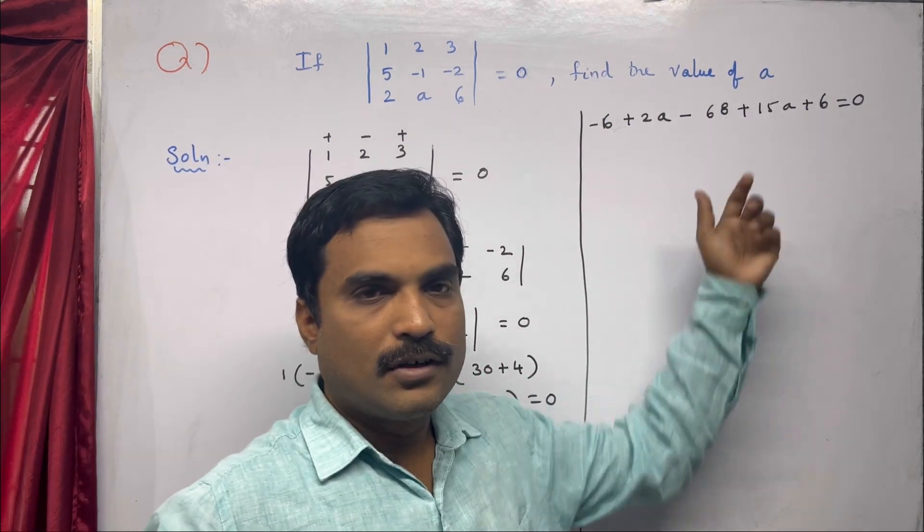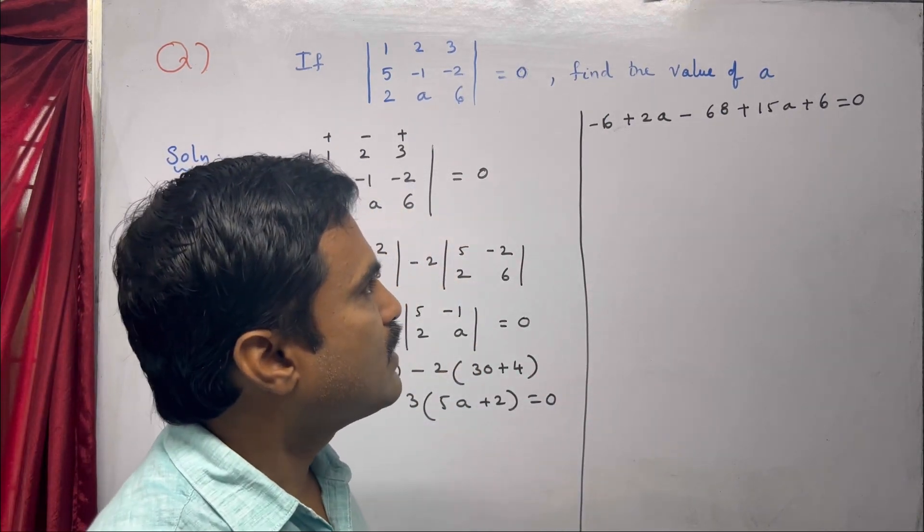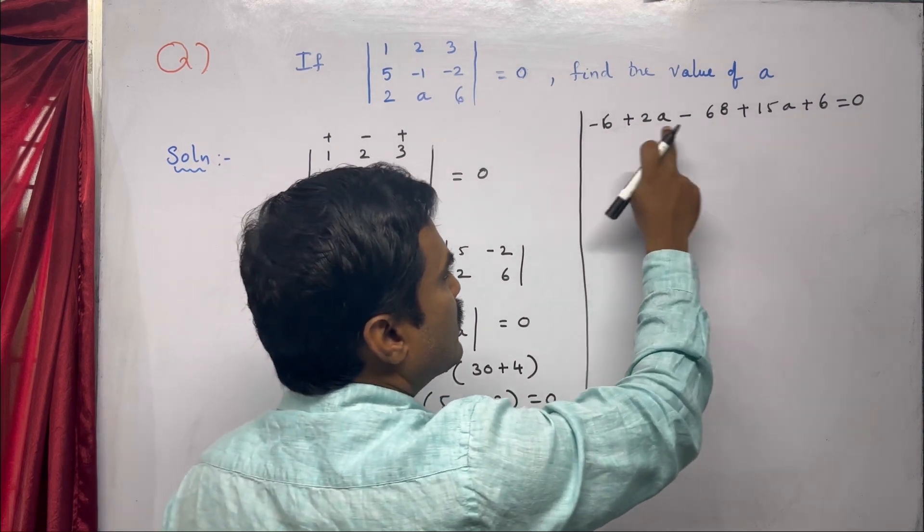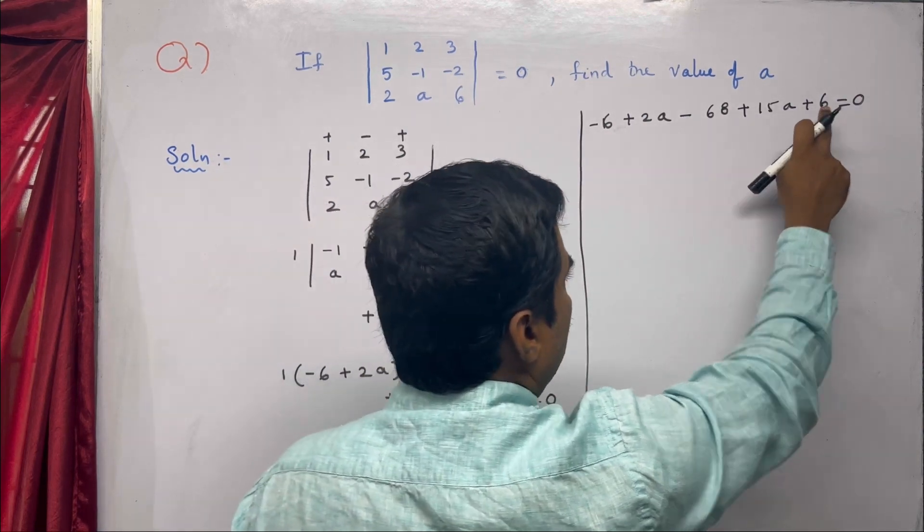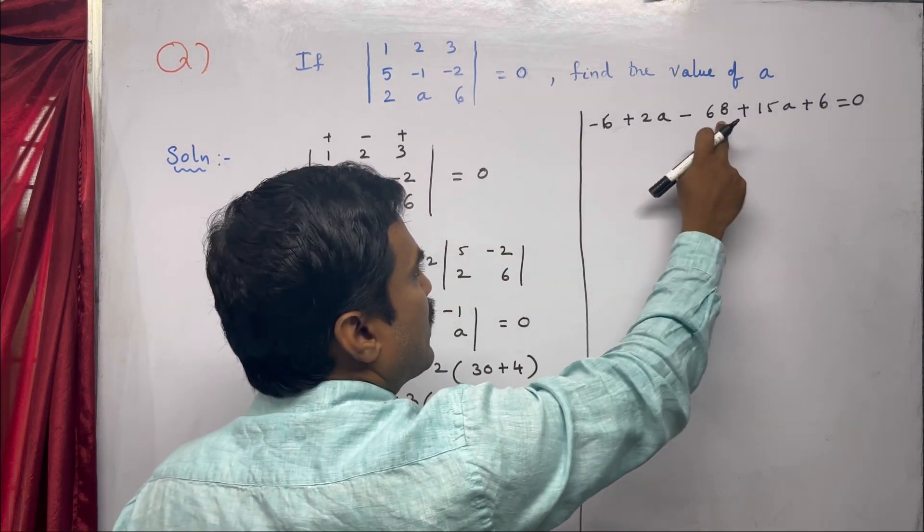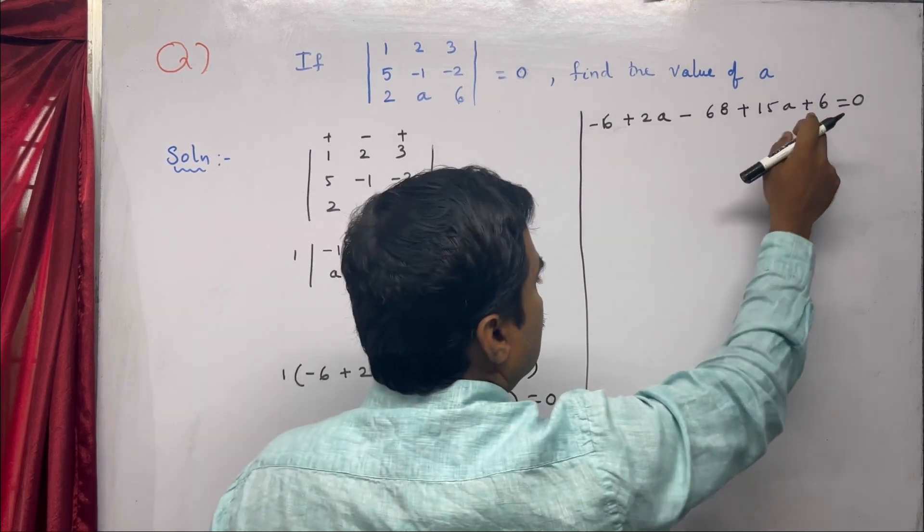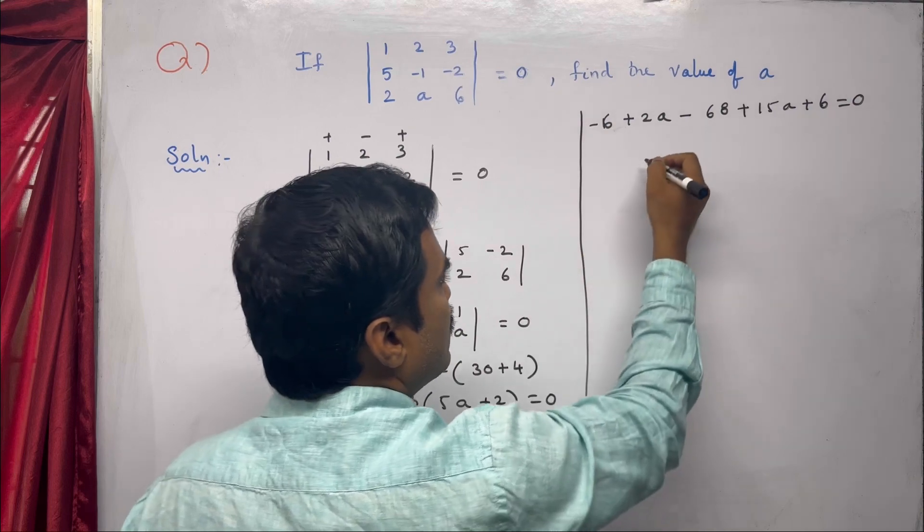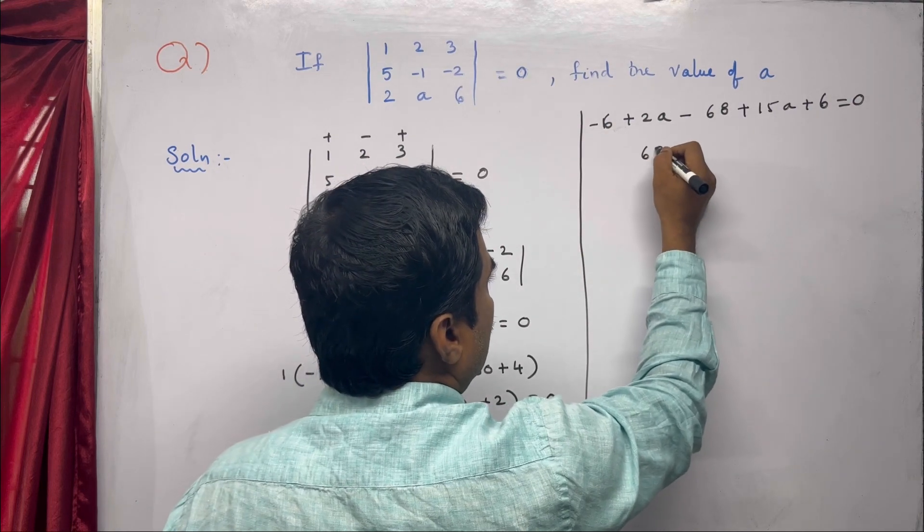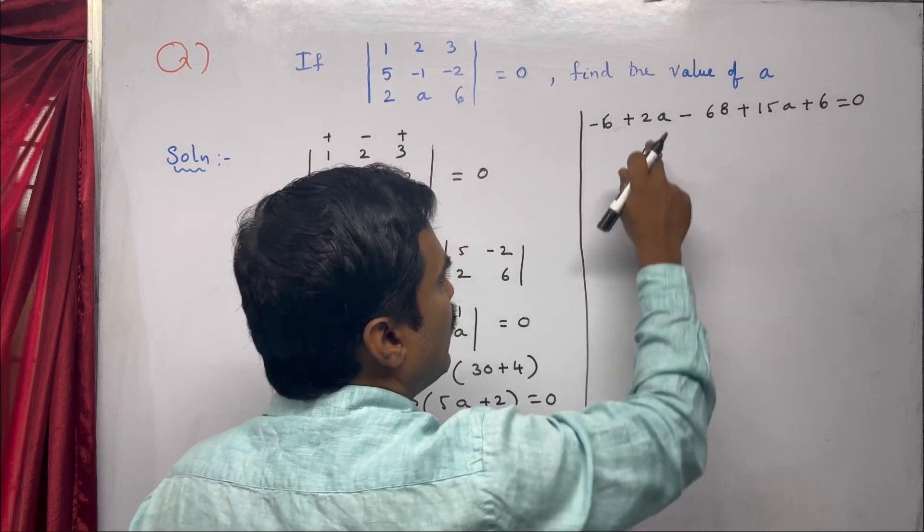Now, let's combine the constant terms. We have -6, -68, and +6. So -6 - 68 equals -74, plus 6 gives -68.